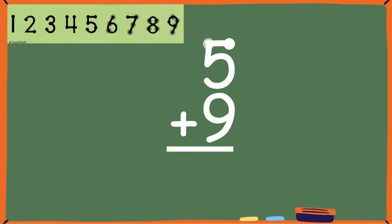Ten, eleven, twelve, thirteen, fourteen. So the sum or answer is fourteen. Five plus nine equals fourteen.